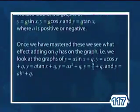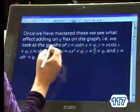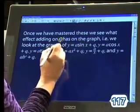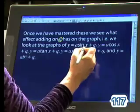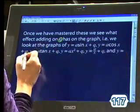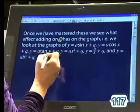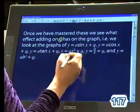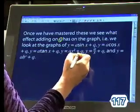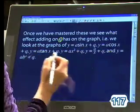Once we've done that, we're going to take our graphs and look at what happens if we take a sin x and add a q to it, a cos x and add a q to it, and a tan x and add a q. There's our ax squared — we're going to look at what effect adding q does to each of the graphs. Functions is really about movements of points on a plane, and that's where we're headed.